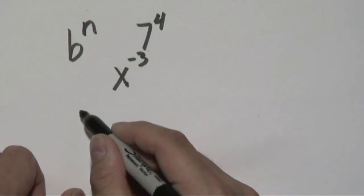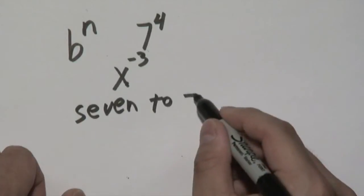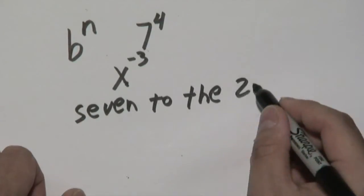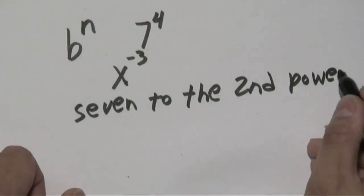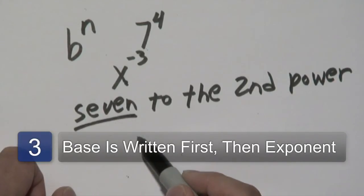So if you have something like, hypothetically if you have 7 to the 2nd power, this here is going to be your base.